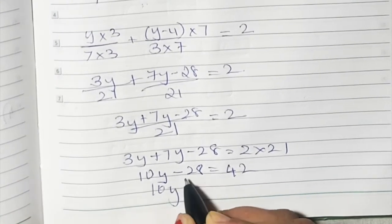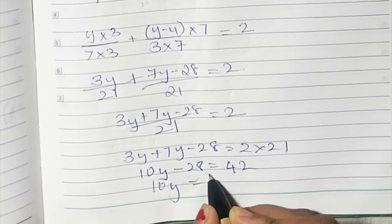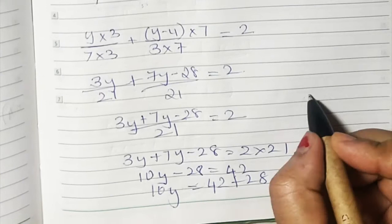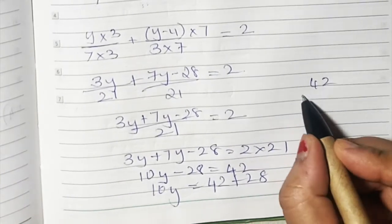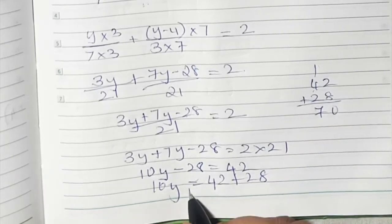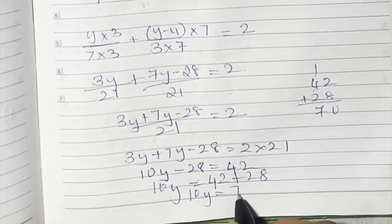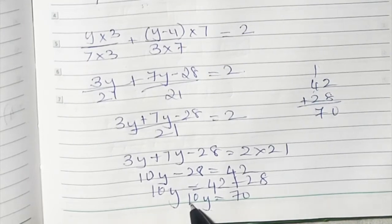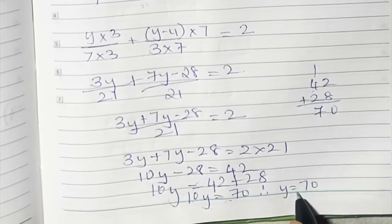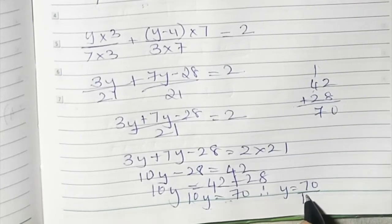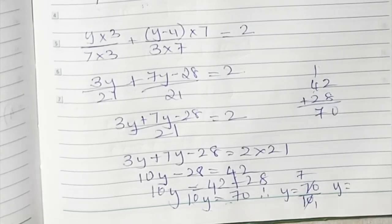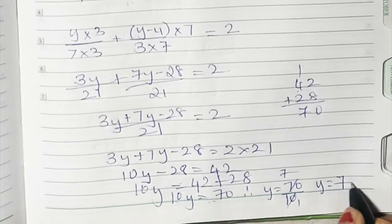3y plus 7y is 10y. So we have 10y minus 28 equals 42. Now minus 28 goes to the other side and becomes plus 28. So 42 plus 28 is 70, giving 10y equals 70. Therefore y equals 70 upon 10.